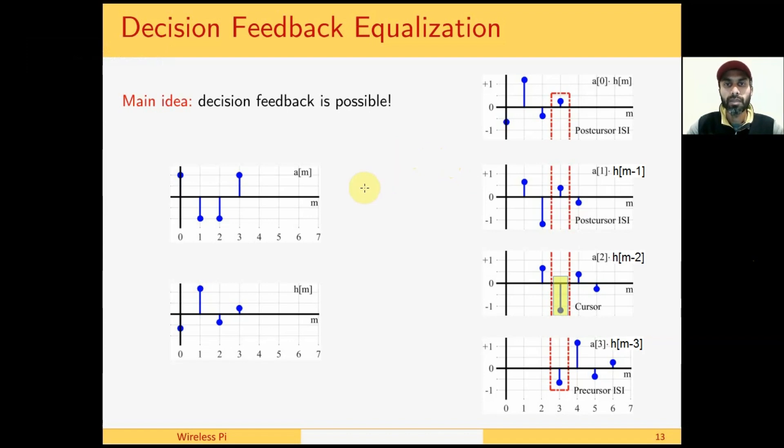Let us take an example to understand this concept. Suppose that there are four modulated symbols: 1, -1, -1, and +1, and the channel response is given by this sequence.